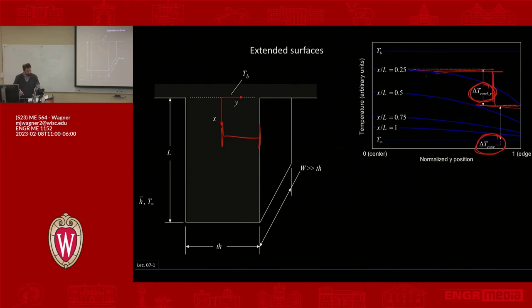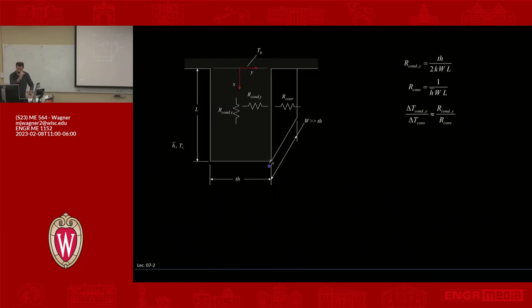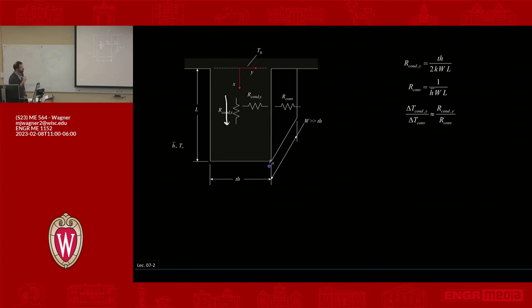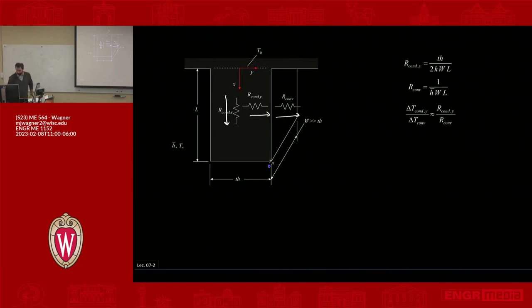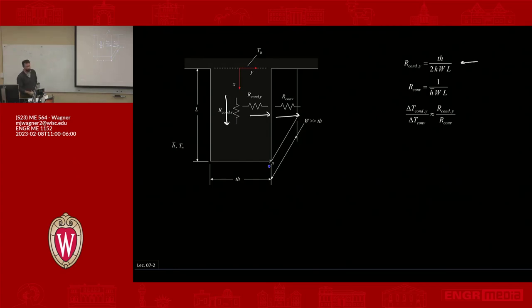What that means is: I'm not saying heat isn't flowing in the y direction — it is, and we'll account for that. What I am saying is that the temperature distribution in that direction isn't important. Looking at the resistances, there are three we care about: resistance to heat flow in x (conduction along the fin), resistance in y (transverse conduction), and resistance to the surroundings (convection).